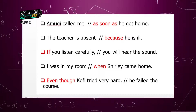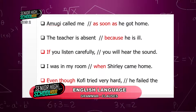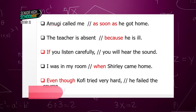We learned in SHS1 that a sentence is a group of words that make a complete thought. When we look at 'Amugi called me,' you understand that perfectly — it is complete in itself. But 'as soon as he got home' — if someone said that and stopped, you'd be left waiting. So the ones with subordinating conjunctions are unable to make complete thought. Those words in front of those groups are called subordinating conjunctions.